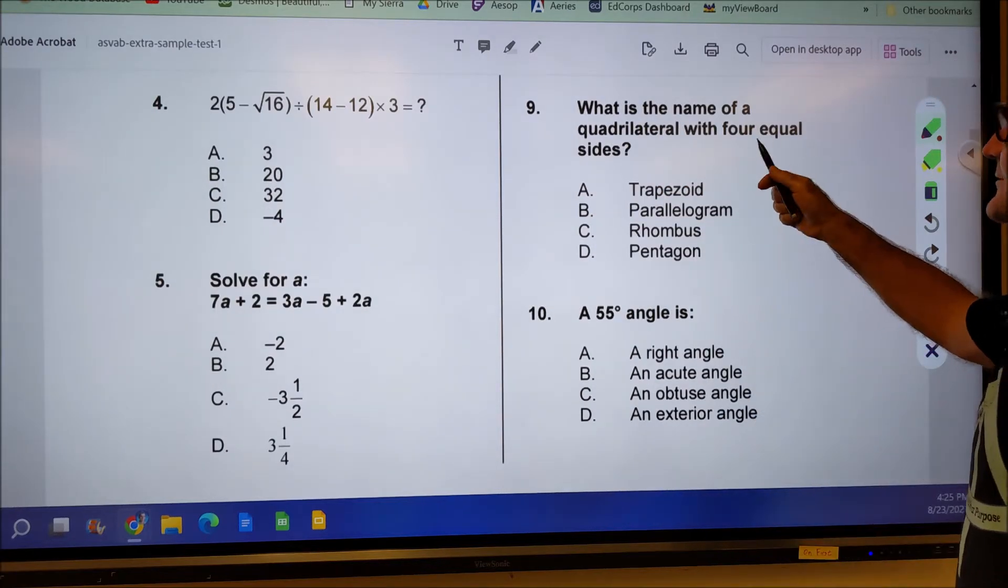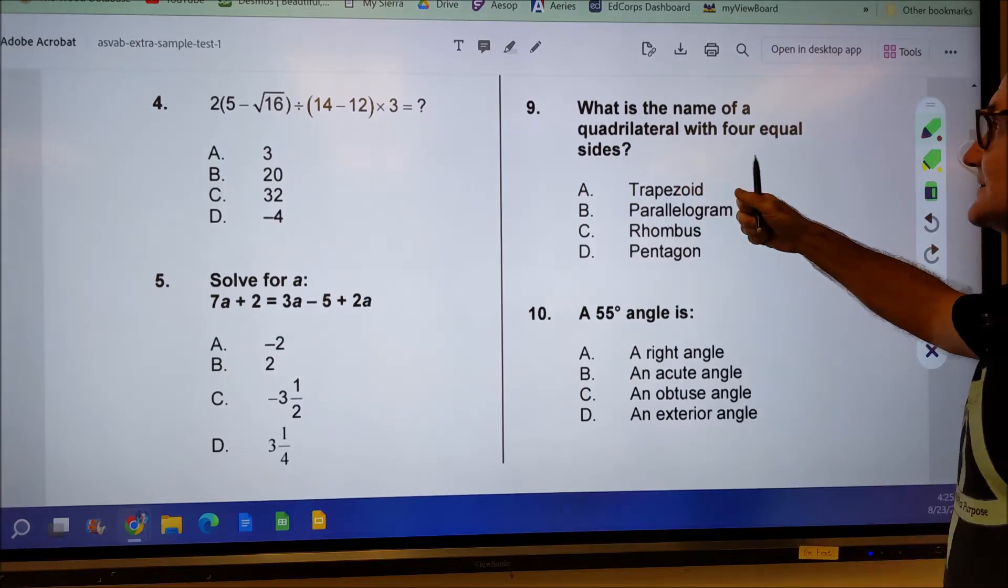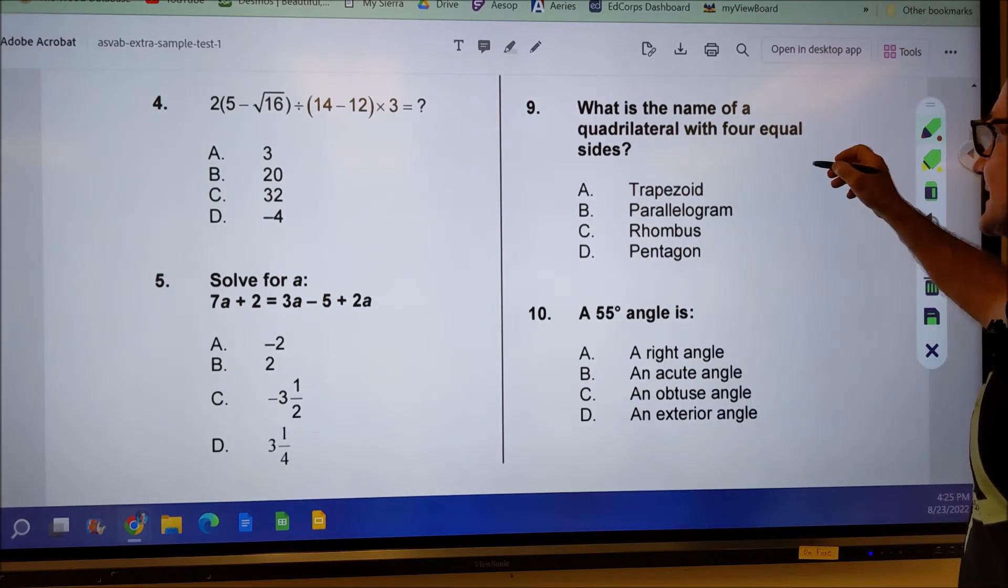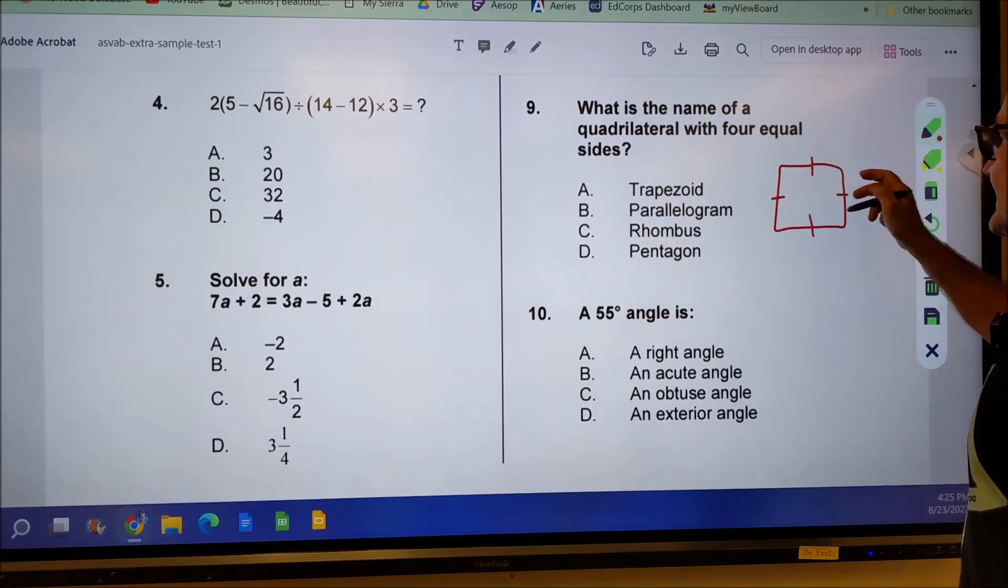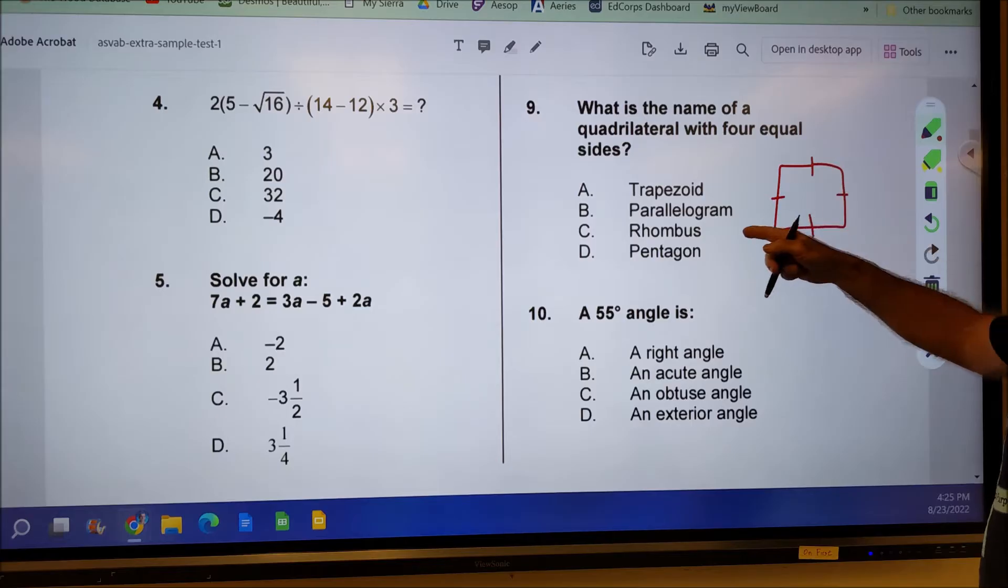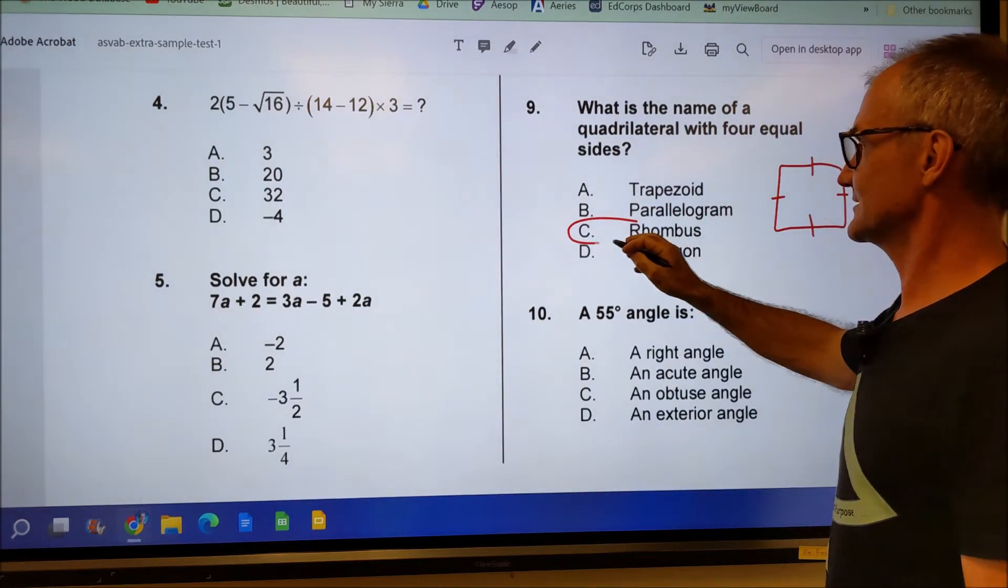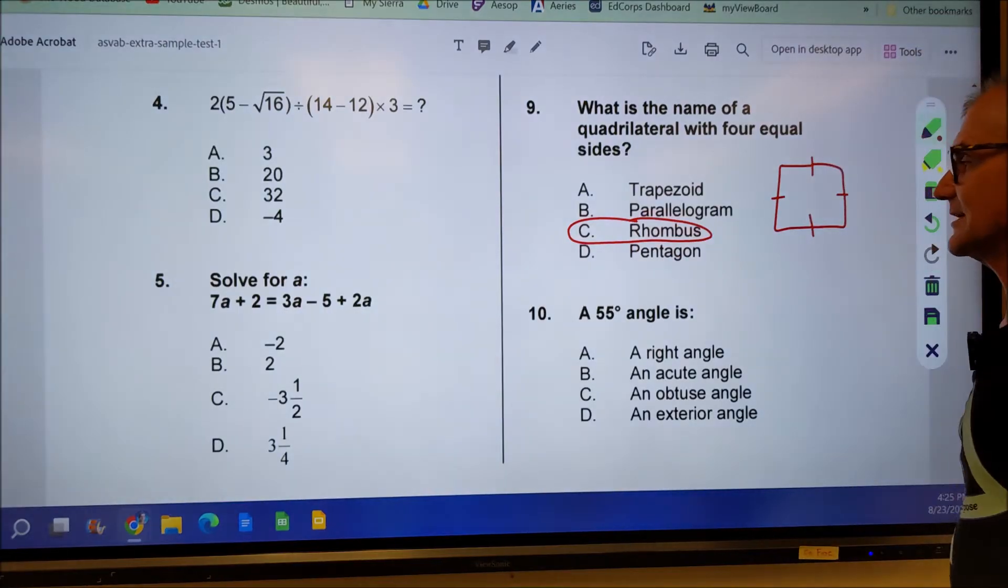Number nine, what is the name of a quadrilateral? Quad is like, right? The quad has four wheels, four sided figure with four equal sides. So I have four sides. They're all equal. They don't actually have to be right angles. It's going to be a rhombus. So the correct answer here, it's really just knowing vocabulary is going to be a rhombus.